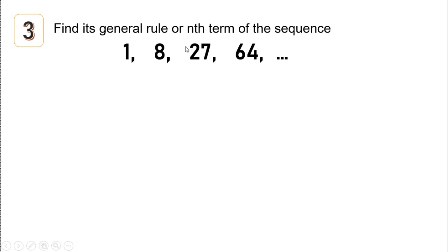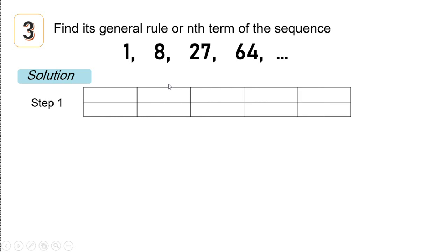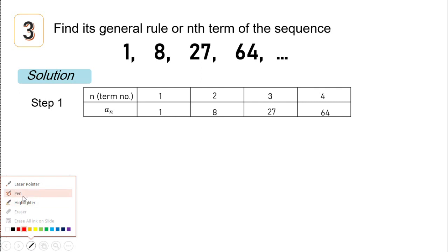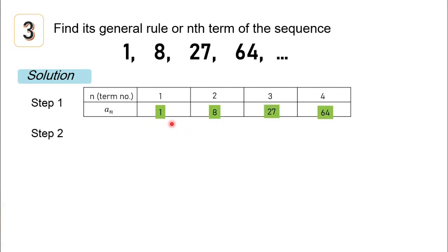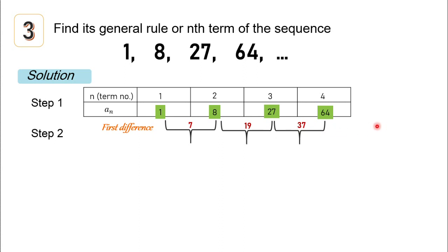Let's have another example: find the general rule or nth term of the sequence. Step one: list the term numbers and a-sub-n. Term number 1 is 1, term number 2 is 8, term number 3 is 27, and term number 4 is 64. For step two, the first differences are: 8 minus 1 is 7, 27 minus 8 is 19, and 64 minus 27 is 37. They don't have the same first difference, so let's proceed to the second difference: 19 minus 7 is 12, and 37 minus 19 is 18. They don't have the same second difference either.